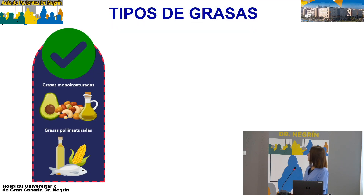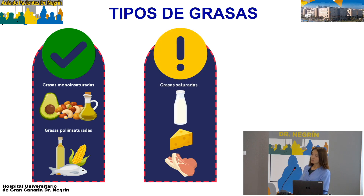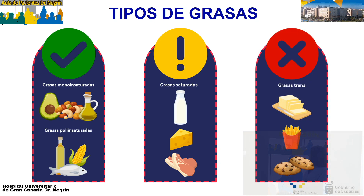Las grasas más saludables son las grasas monoinsaturadas y las poliinsaturadas. Estas son las buenas, las que ayudan a aumentar el colesterol bueno y a reducir el malo. Las monoinsaturadas están en el aguacate, el aceite de oliva y los frutos secos. Las poliinsaturadas en el pescado y otros tipos de aceite. Luego tenemos las grasas saturadas, que aumentan el colesterol: lácteos grasientos, nata, leche entera, quesos y carnes rojas. Y las peores de todas son las grasas trans, modificadas por la industria para prolongar el tiempo de los alimentos, presentes en alimentos procesados como margarinas, papas fritas, galletas y ultraprocesados.